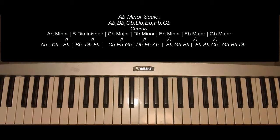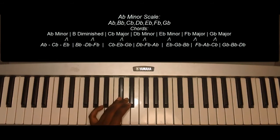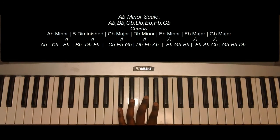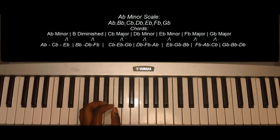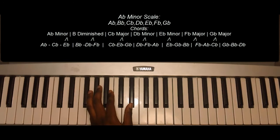The notes of the A-flat minor scale: A-flat, B-flat, C-flat, D-flat, E-flat, F-flat, G-flat. The tonic chord, A-flat minor, consists of A-flat, C-flat, E-flat.